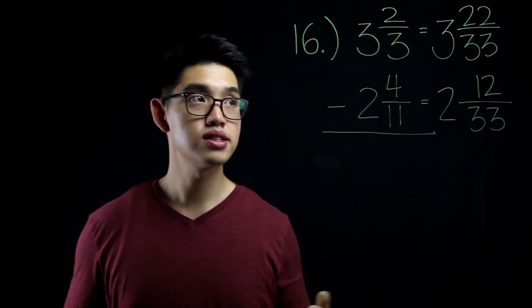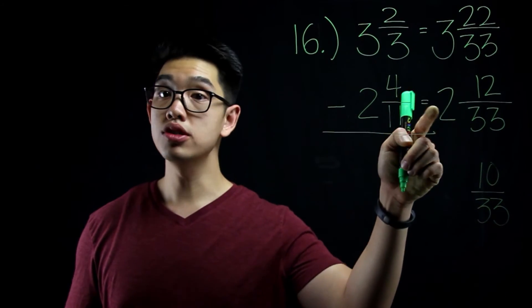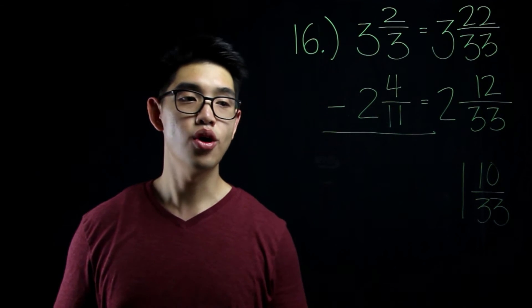Now I can subtract. 22 minus 12 equals to 10. 3 minus 2 equals to 1. Your answer is 1 and 10 over 33.